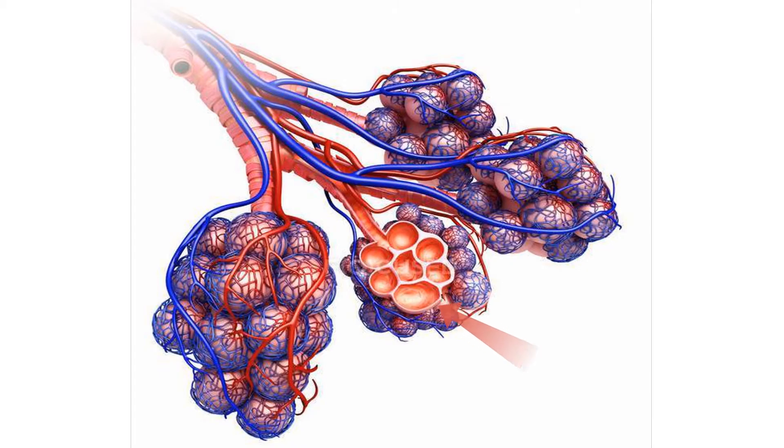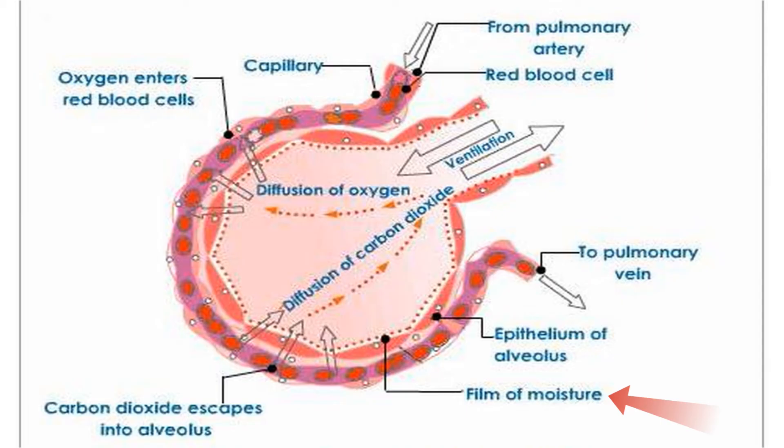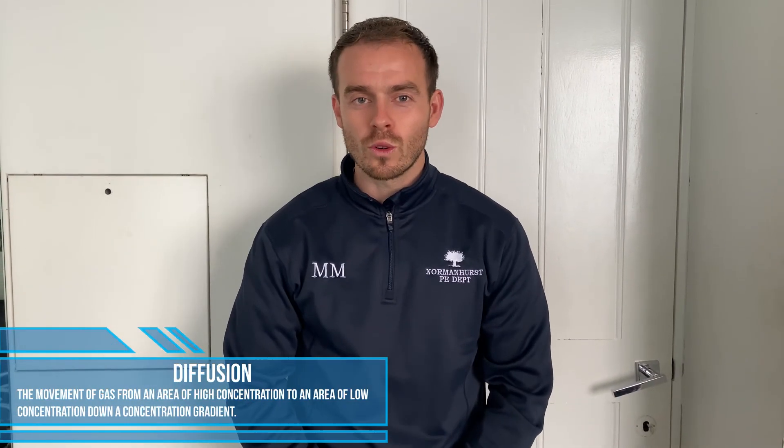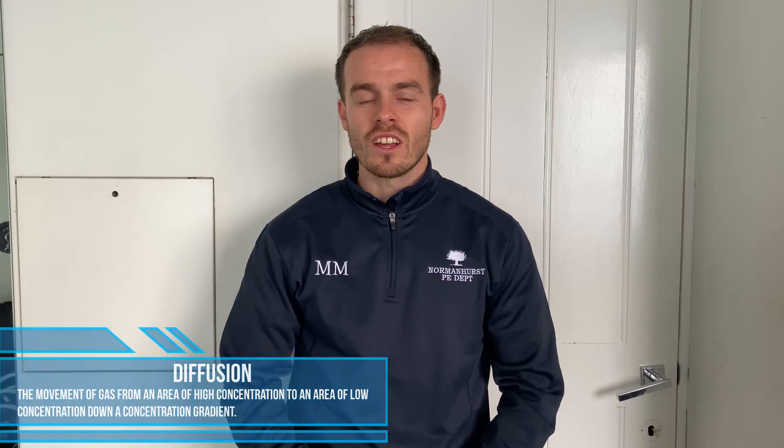The alveoli have a large surface area, which means uptake of oxygen is greater, but also carbon dioxide can be removed from the body when exhaling more efficiently. The alveoli also have moist, thin walls that are one cell thick, which enables gases to pass through the cell walls more efficiently. These thin walls result in a short diffusion pathway, which means diffusion occurs quicker. Diffusion refers to the movement of particles from an area of high concentration to an area of low concentration, down a concentration gradient.